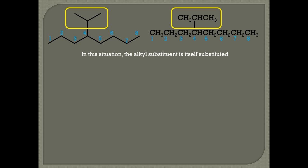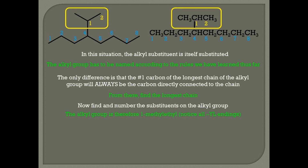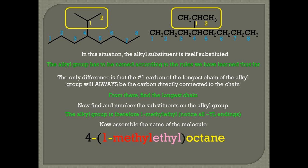Rule thirteen. In this situation, the alkyl substituent is itself substituted. The alkyl group has to be named according to the rules we have learned thus far. The only difference is that carbon one of the longest chain of the alkyl group will always be the carbon directly connected to the main chain. From there, find the longest chain and number the substituents on the alkyl group. The alkyl group is therefore 1-methyl-ethyl. Notice all the -yl endings. Assemble the name of the molecule as (1-methylethyl)octane.